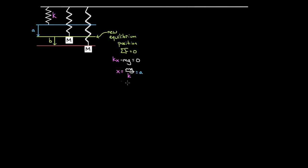If we take this mass and pull it down an extra distance B from the new equilibrium position, the spring is stretched extra and pulls up with more force than gravity, so the mass accelerates upward. It reaches the equilibrium position with some speed and oscillates. To find that speed, we use conservation of energy: the initial energy equals the final energy, choosing the initial point where the mass is released from rest.